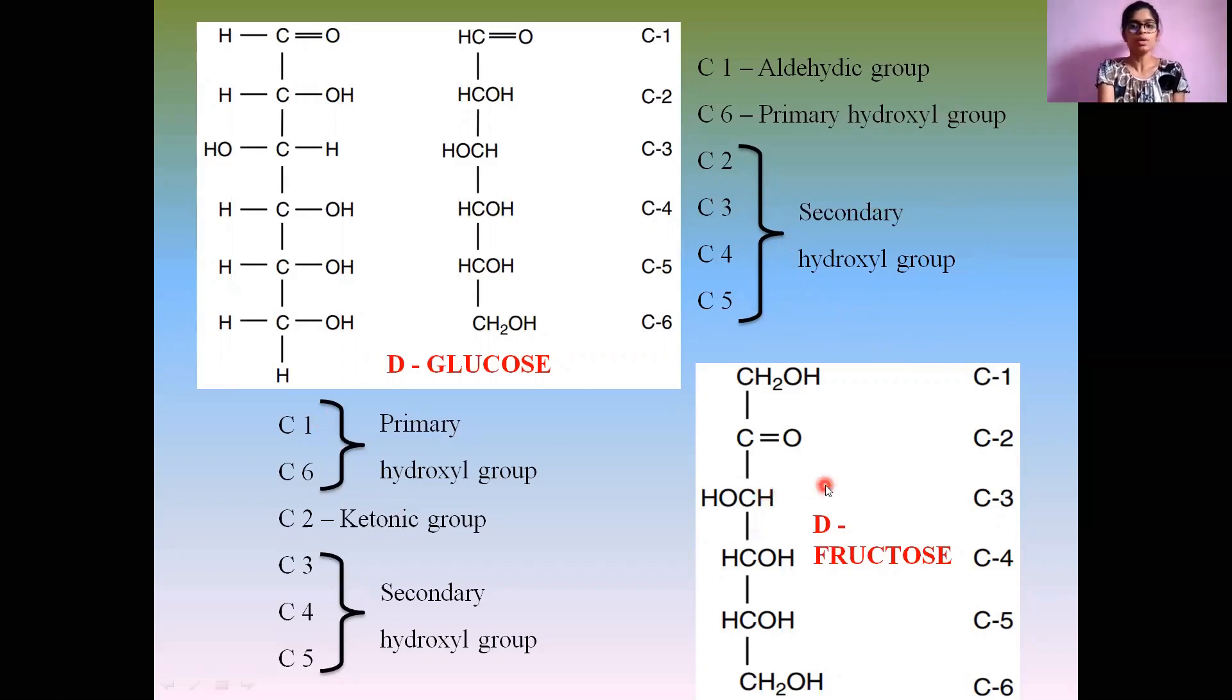For the ketose group, C1 and C6 represent the primary hydroxyl group, whereas the functional group is present at the C2 position, and the secondary hydroxyl groups are at C3, C4, and C5 positions. There are only three secondary hydroxyl groups for a hexose keto sugar and four secondary hydroxyl groups for a hexose aldose sugar.